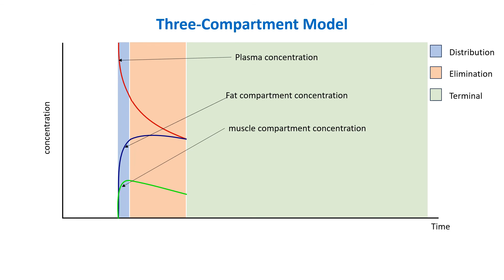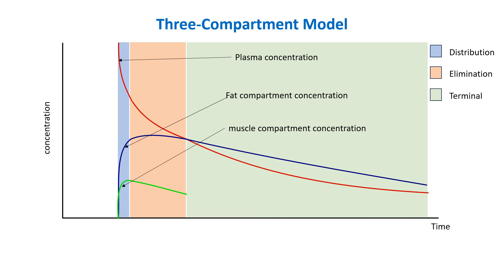The elimination phase transitions into the terminal phase when the drug concentration in the fat compartment exceeds the concentration in the blood. At this point, the fat tissues begin to release drug back into the bloodstream. This redistribution of drug from the fat compartment slows the overall clearance of drug from the central and muscle compartments.